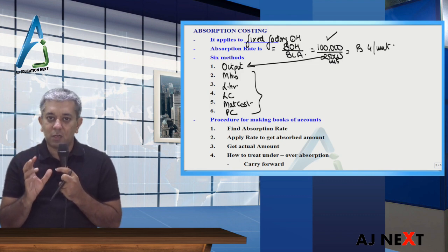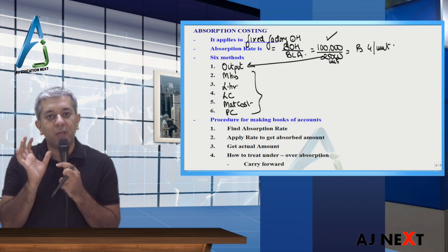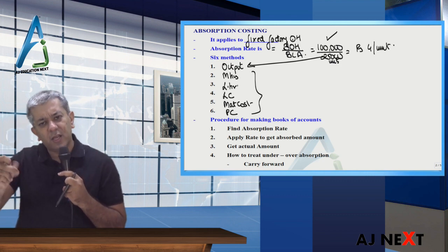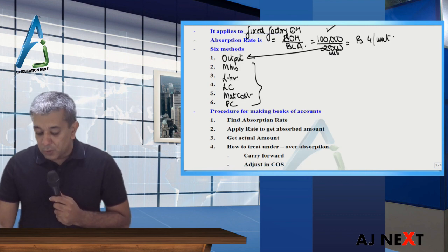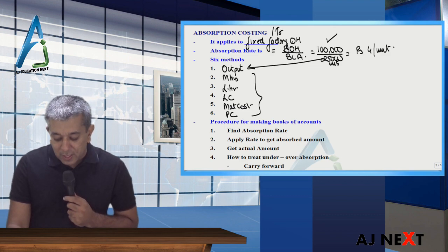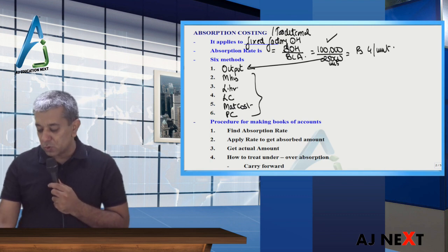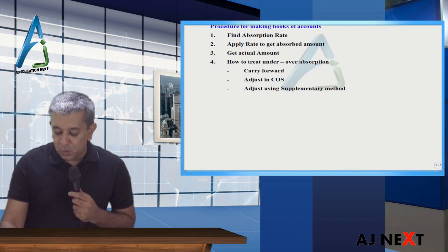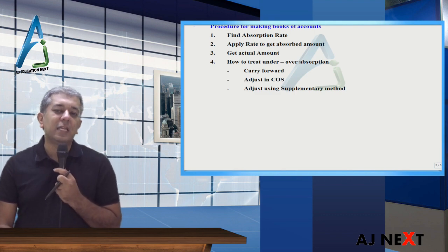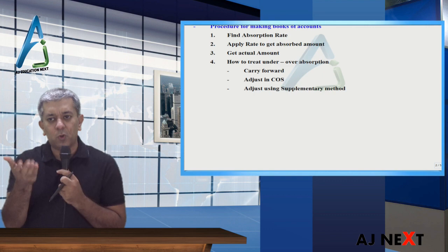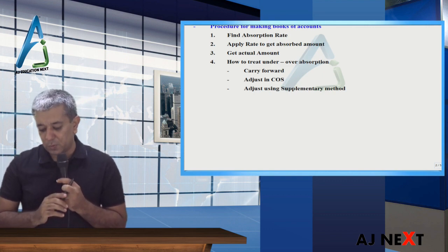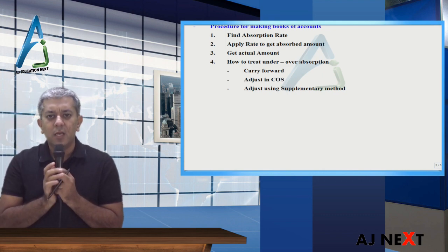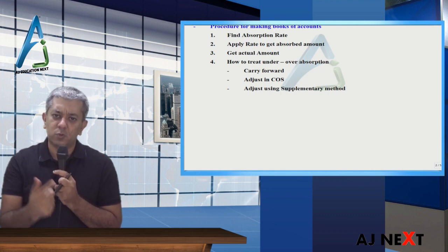So how will your denominator be expressed? If in units then output method, if machine hours then machine hour method, so on and so forth. Okay? Remember, whichever method you follow, still you will get only one rate. That rate is your accounting rate, to charge in the books of accounts. Okay, always remember that thing. Absorption costing is also called as traditional costing. You might see this name many times in activity based costing. Also called as traditional costing.